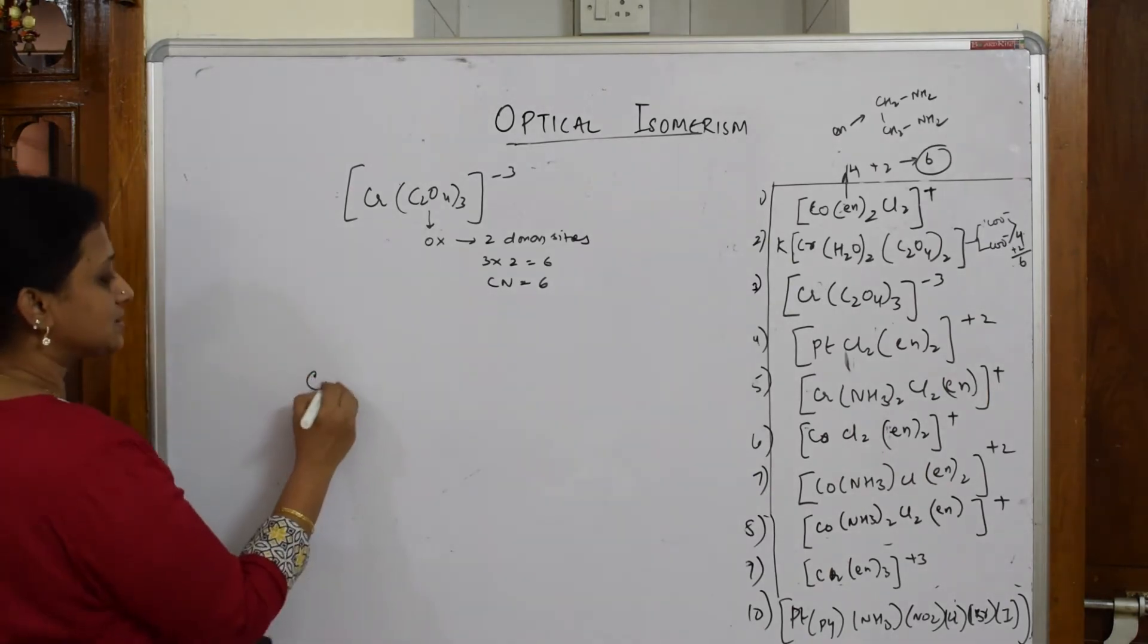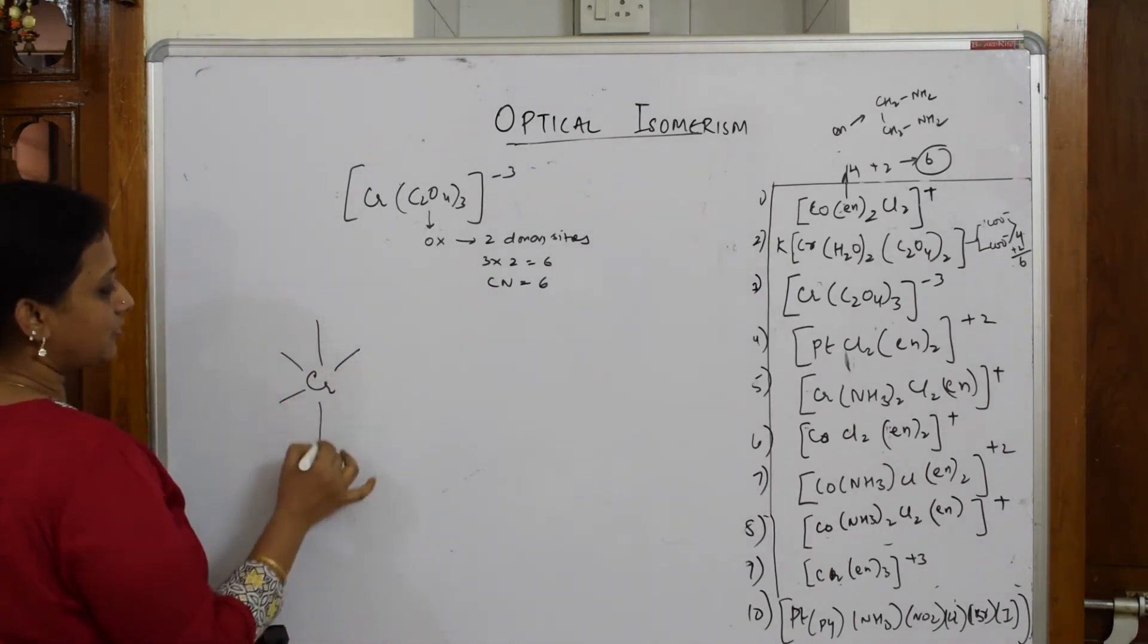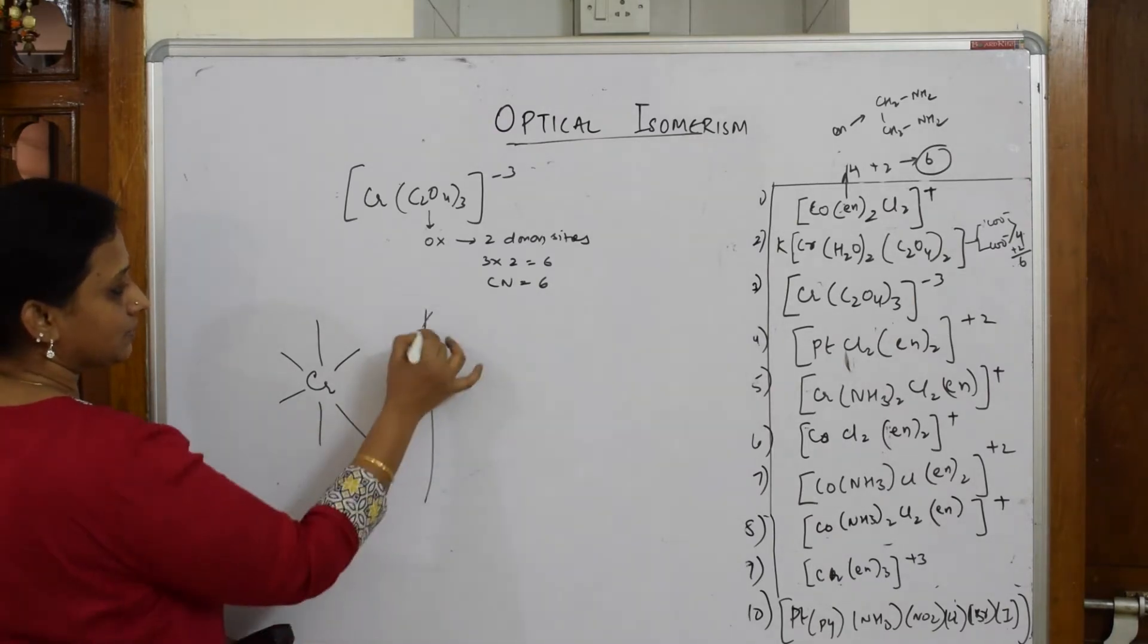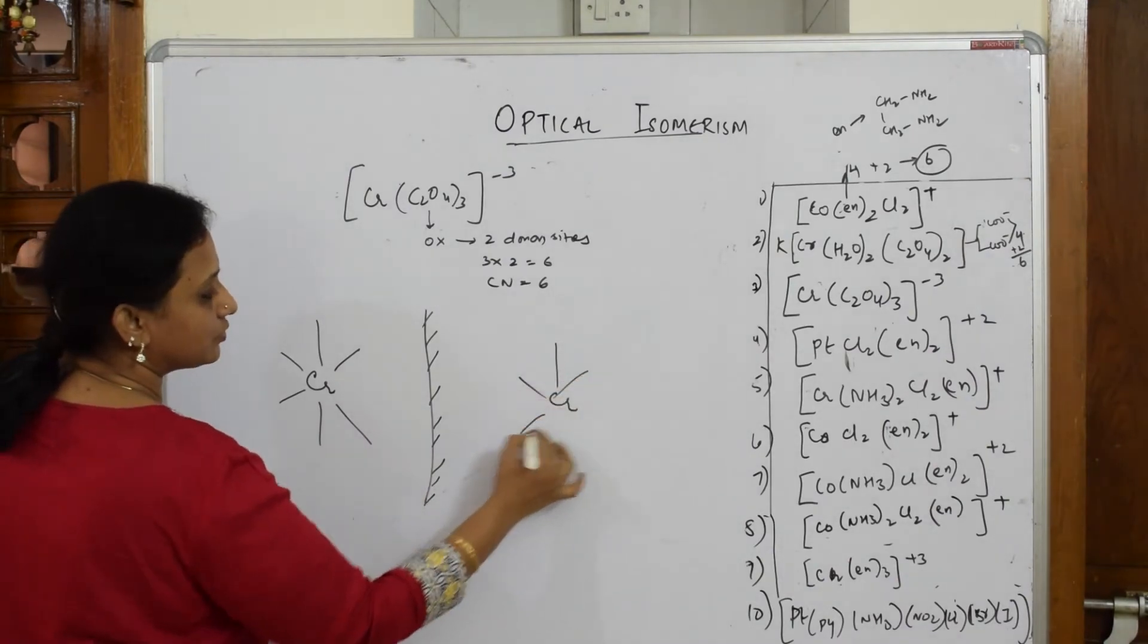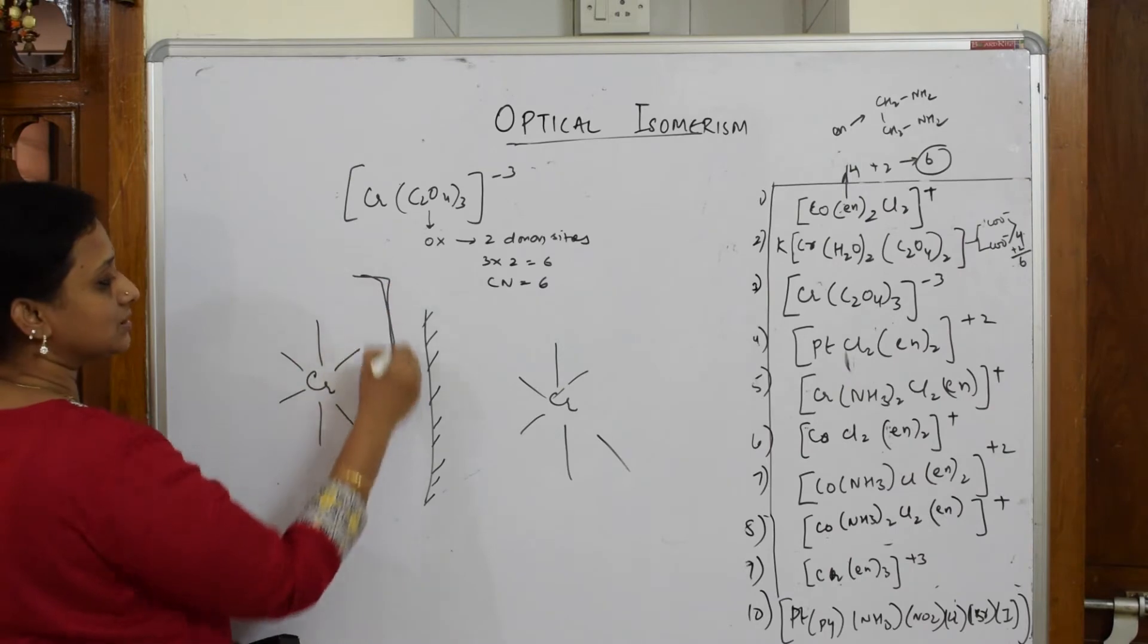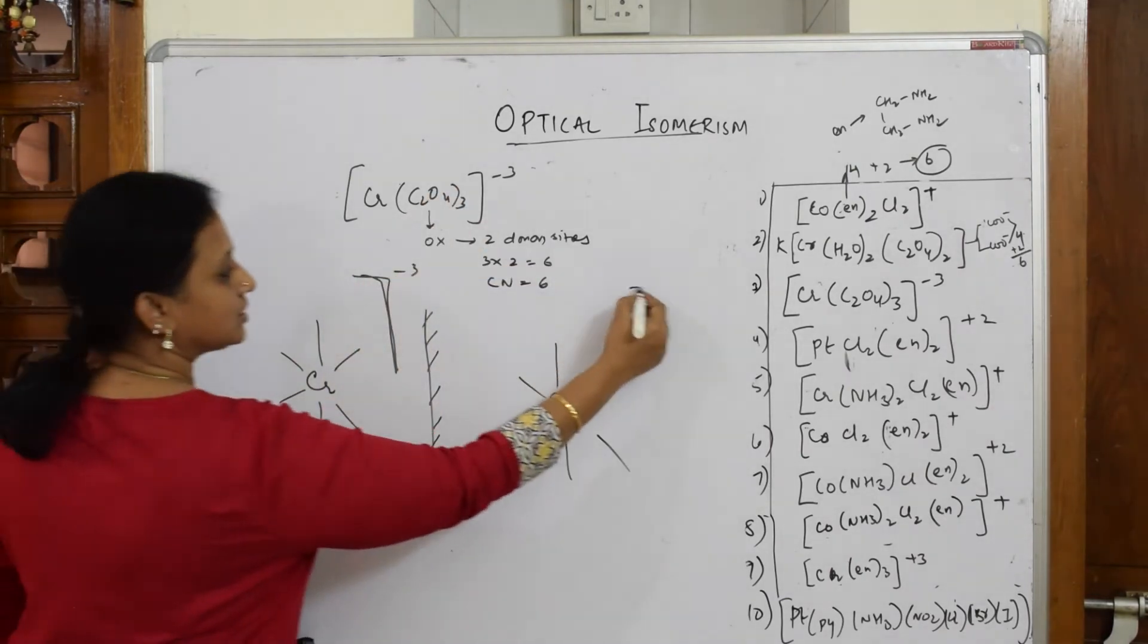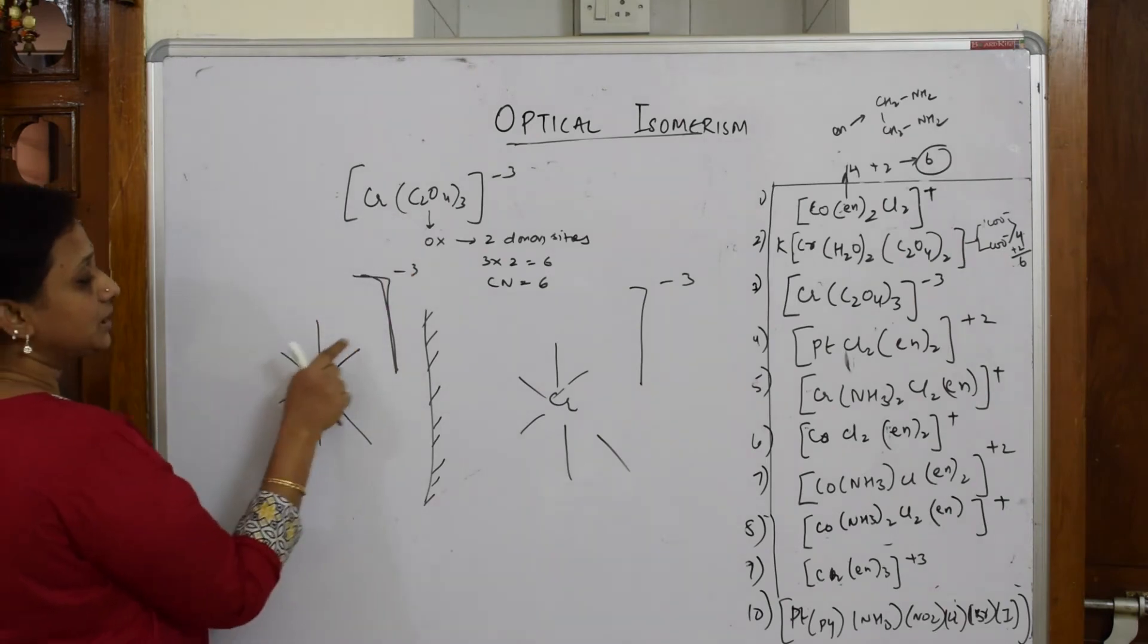Take that complex: Cr, one, two, three, four, five, six. Mirror image, I'm drawing this: Cr, one, two, three, four, five, six. The complex charge you can put like this, and -3 here. The complex charge is -3.